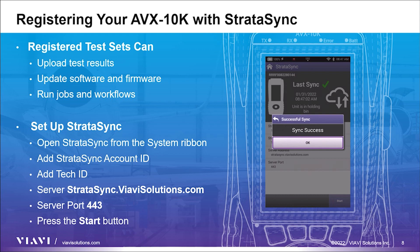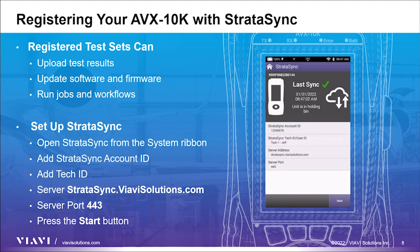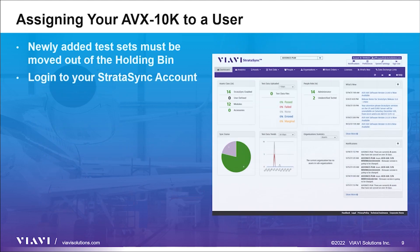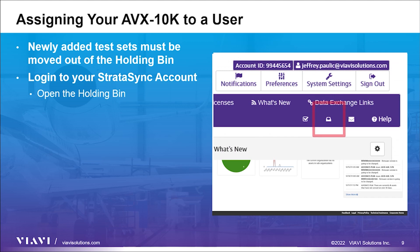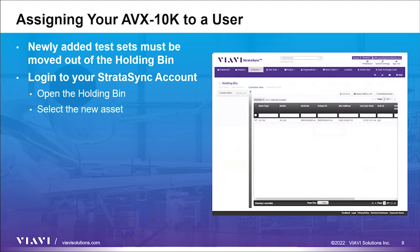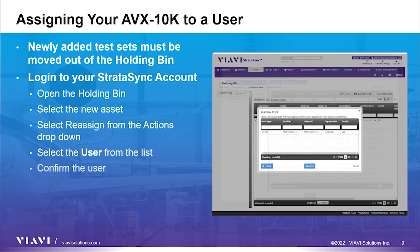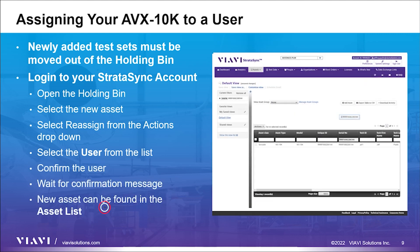When the process is complete, you'll get a sync success message and the test set will confirm the time and date. Next, we will use the Stratasync website to remove the asset from the holding bin. Once your test set successfully connects with Stratasync, it is time to finalize the setup process back in the Stratasync website. Newly added test set assets are held in a holding bin until they are assigned to a user. In order to move an asset from the holding bin to the organization inventory, the asset needs to be assigned to a user — this can be the existing user that you created earlier, or you can create a new user. Begin by logging into the Stratasync website and select the holding bin icon from the main toolbar. Find the serial number of the asset that was added in the last step and tick the box to the left. Right click the item or use the action drop-down and select the reassign option. On the resulting screen, select the organization and a user and click the reassign button, then click confirm. The website will confirm the asset association and users will find the asset in the asset list.